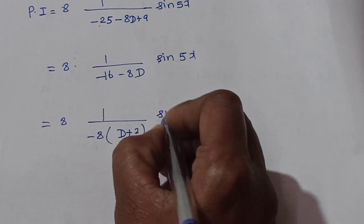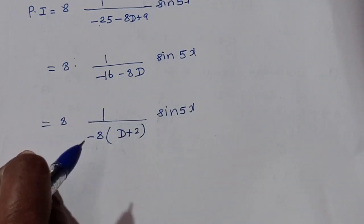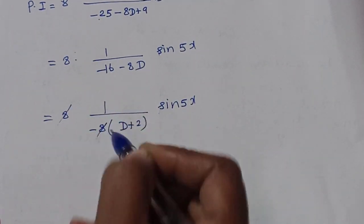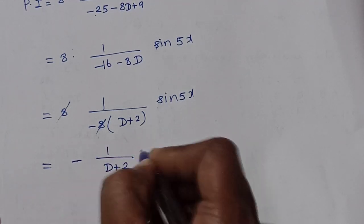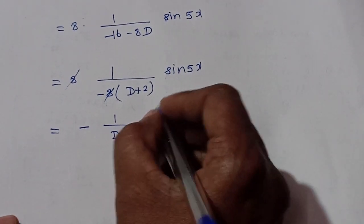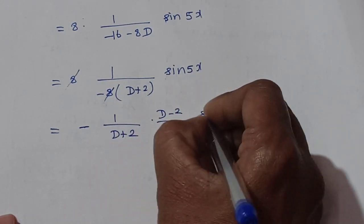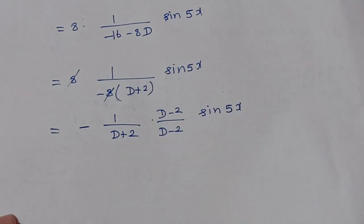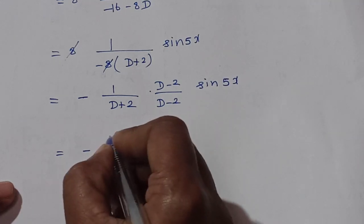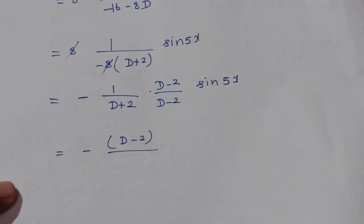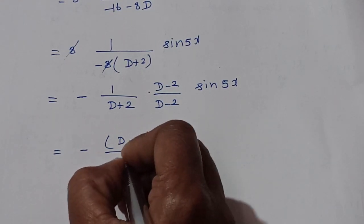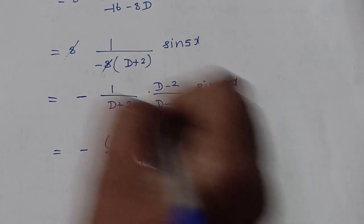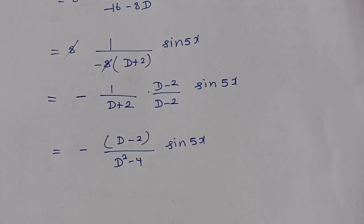We multiply numerator and denominator by the conjugate (D minus 2) to rationalize. So we have minus (D minus 2) divided by [(D plus 2)(D minus 2)] into sin 5x. Using the identity (a+b)(a−b) = a² − b², the denominator becomes D² minus 4. We then replace D² by minus 25, giving minus 25 minus 4 = minus 29.